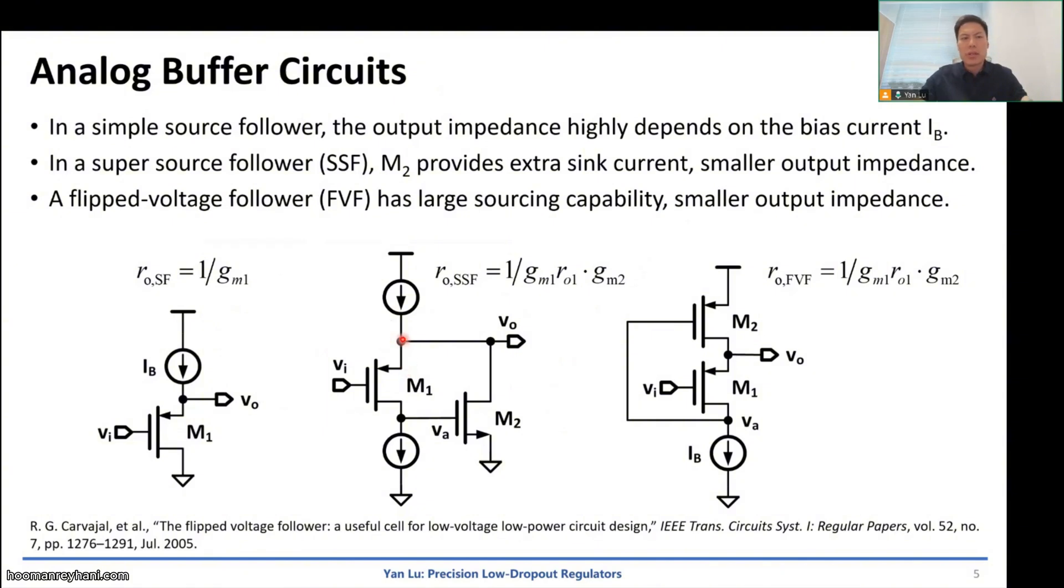If we want to reduce the output impedance without increasing the current too much, we can use the super source follower, which has a local feedback. It will amplify the output variation through M1 into VA and then be converted to current through M2. So the output impedance will be 1 over gm times gmro. So it has been further reduced by gmro times.